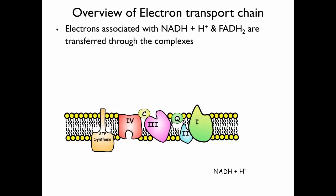The reduced coenzymes NADH and FADH2 have electrons associated with them. Those electrons are going to be transferred through the complexes. Electrons from NADH are going to be transferred at complex 1. Electrons from FADH2 are going to be transferred at complex 2. So electrons move through the electron transport chain — NADH donates at complex 1 and FADH2 at complex 2.